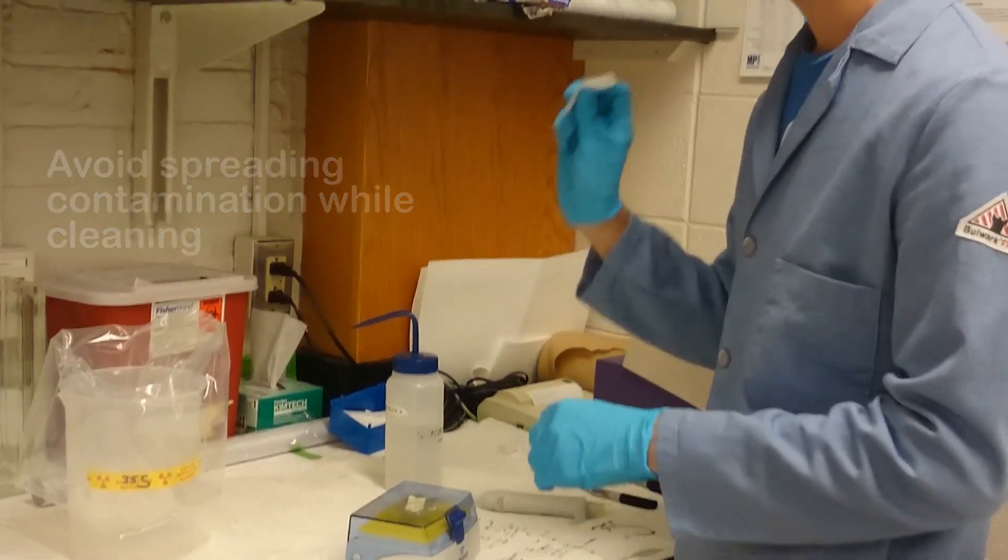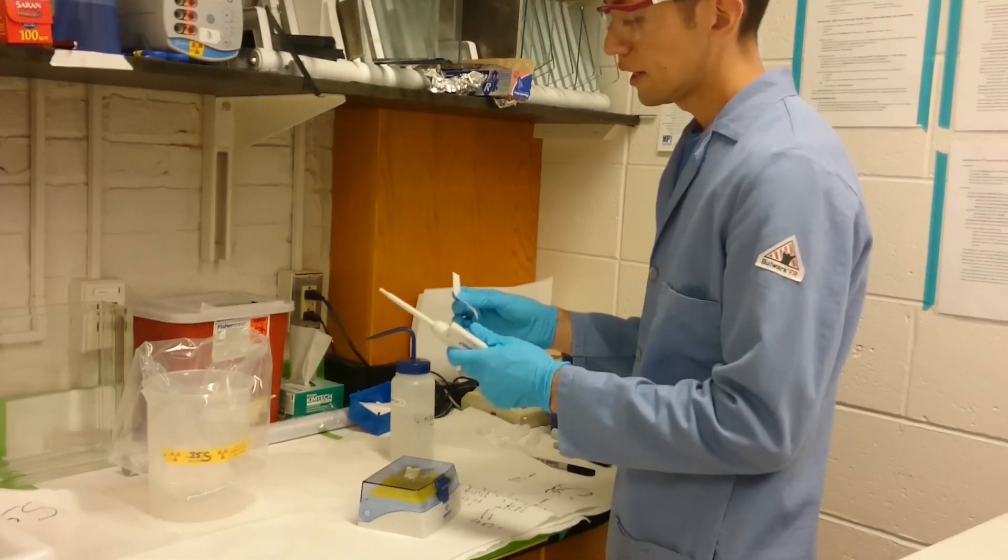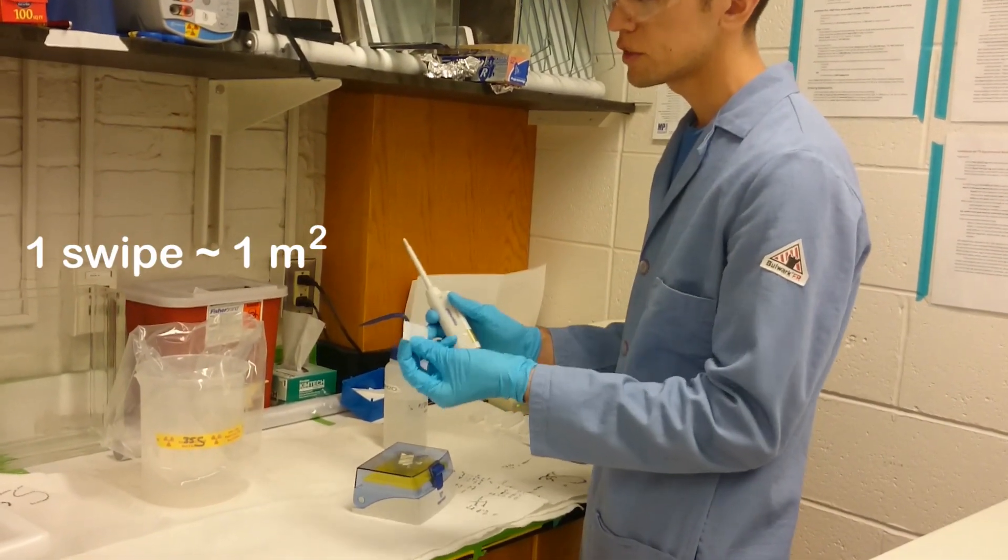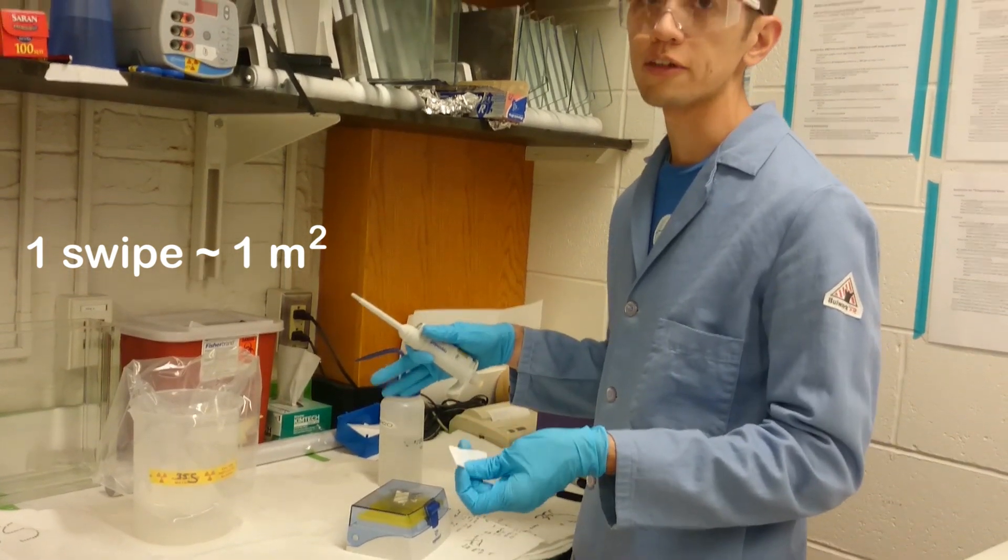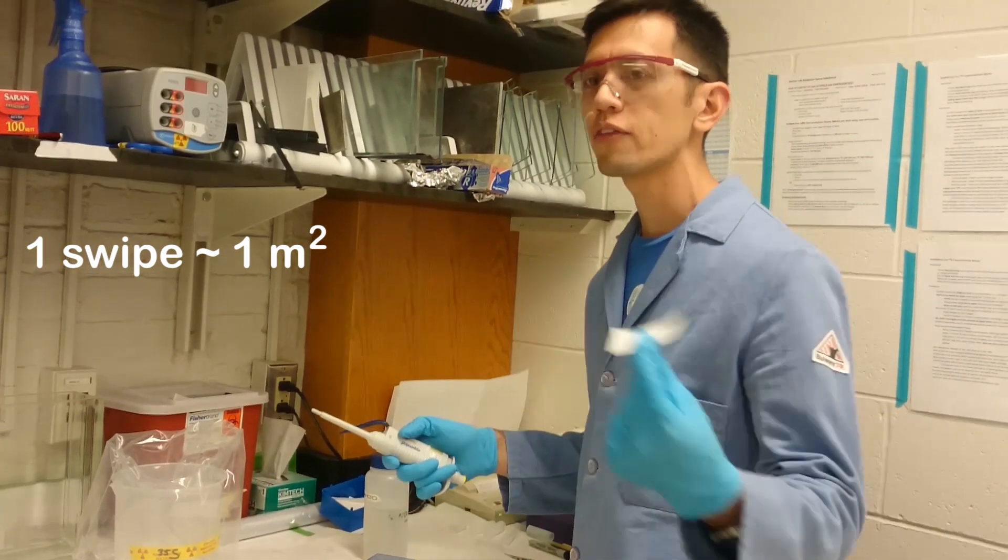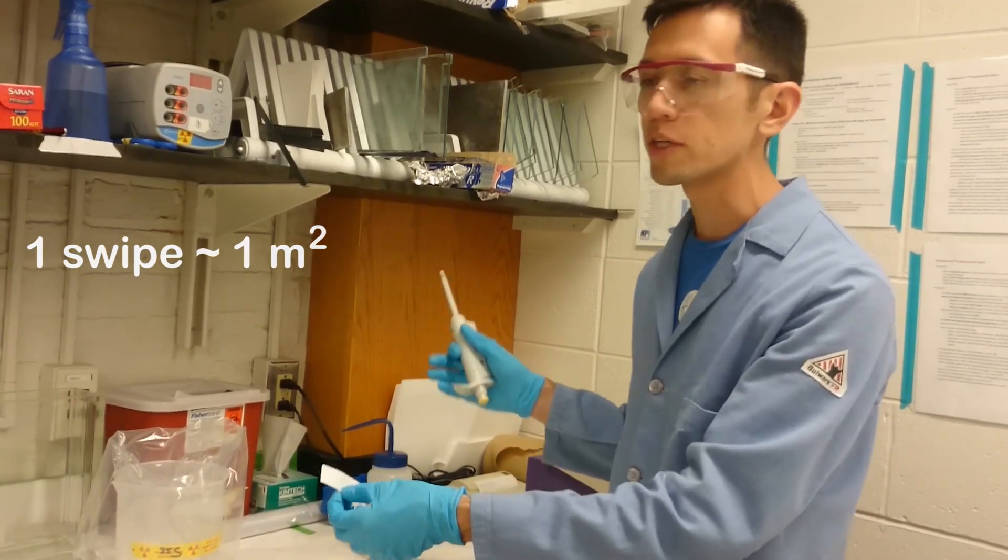In terms of how much a particular swipe can handle, the general rule of thumb is that one swipe can cover one square meter of surface area. So you can't use one swipe to check everything on your workbench.